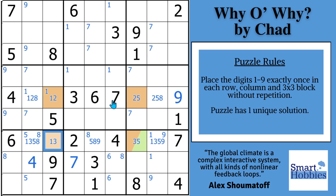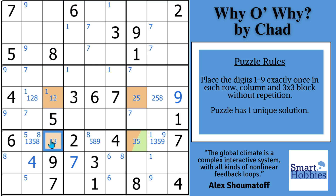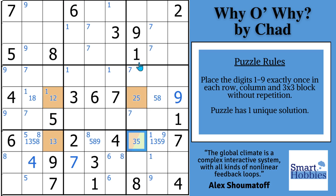What this means is you can eliminate all the other ones along column three — these can't be ones anymore because the one has to be one of these two cells. You can eliminate all the other twos along row five. You can eliminate all the other fives along column seven. And then you eliminate all the other threes along row seven.